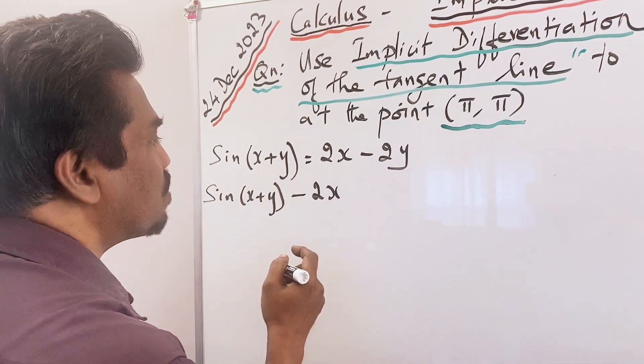Since the tangent line is a straight line with general form y = mx + c, we substituted the known point (π, π) and m = 1/3 to find b = 2π/3. So the final equation of the tangent line is y = (1/3)x + (2/3)π.